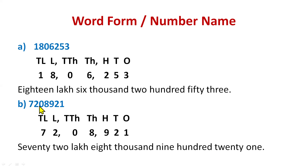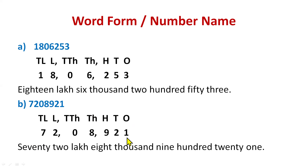Now let's see another example. First write the place value chart above the number — start from the right side digit, which is one. Above one write ones, then tens, hundred, thousand, ten thousand, ten lakh. Insert the commas and read the number: seventy two lakh eight thousand nine hundred twenty one. So we have done the word form. In some books the question will say 'write word form' and in others 'write number name' — both mean the same thing.